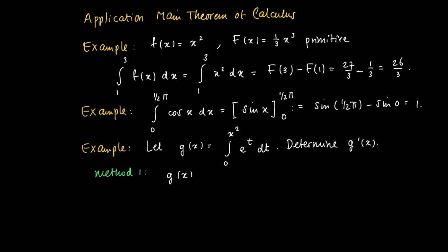The first method is to actually calculate the integral as if it were a definite integral with upper bound x squared. We know that e to the power t has e to the power t as a primitive, so we may evaluate this primitive at the boundary values. We get e to the power x squared minus e to the 0, which equals e to the power x squared minus 1.